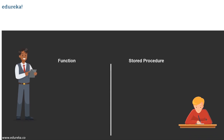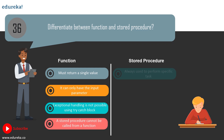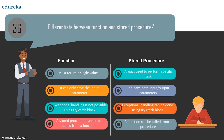Question 36: difference between a function and a stored procedure. In a SQL function, you can only return one variable, while a stored procedure can return multiple variables (you must declare variables outside the procedure to invoke them). A function returns only a single value, while a stored procedure is always used to perform a specific task.